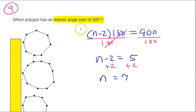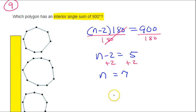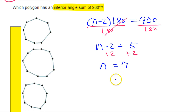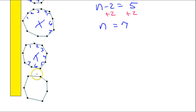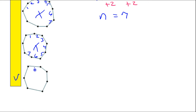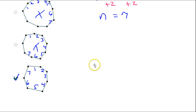So our job is to look and count which answer choice has 7 sides. Counting through the options, the last one has 1, 2, 3, 4, 5, 6, 7 sides — that's the one.